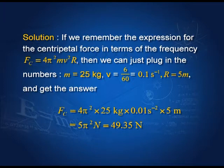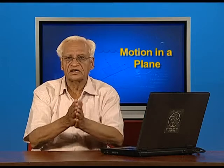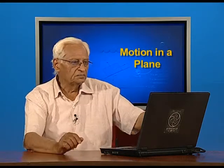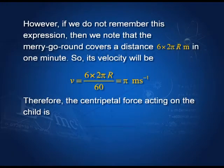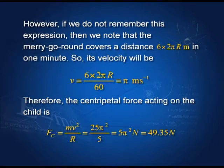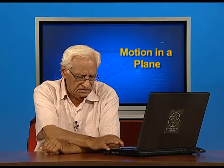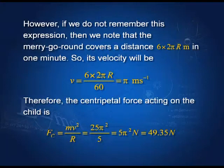If you do not remember the formula, then you can find the velocity and use mv²/r to compute. It makes 6 rounds, so it covers a distance of 6 times 2πr in 1 minute. The velocity is 6 × 2πr divided by 60, which is π meters per second. The force is mv²/r: mass is 25 kilograms, so 25π² divided by 5, which gives 5π² newtons, equal to 49.35 N. This illustrates how centripetal force is calculated.